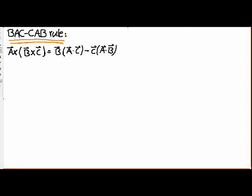Now I'm going to prove this relation. To do so, I will prove it component by component — that means I will prove this relation for the X component first, then the Y component, and then the Z component. Note that A dot C is a scalar, so there is no component index on it.